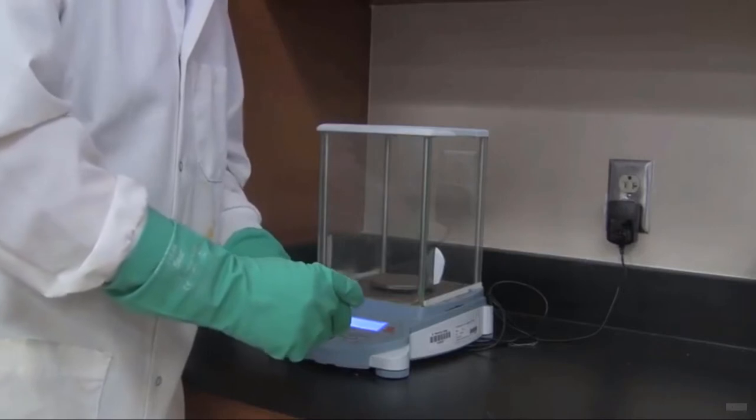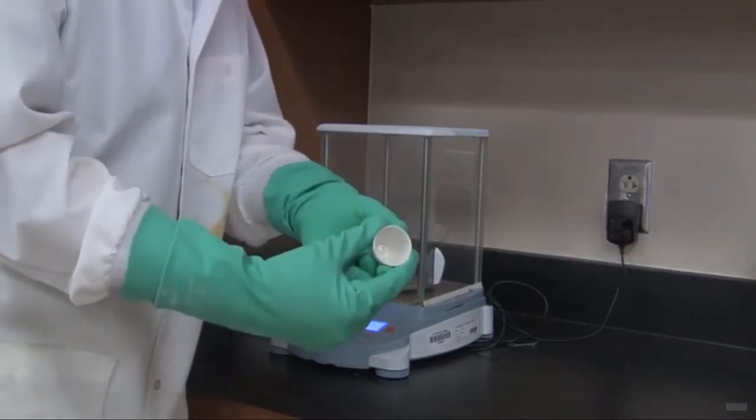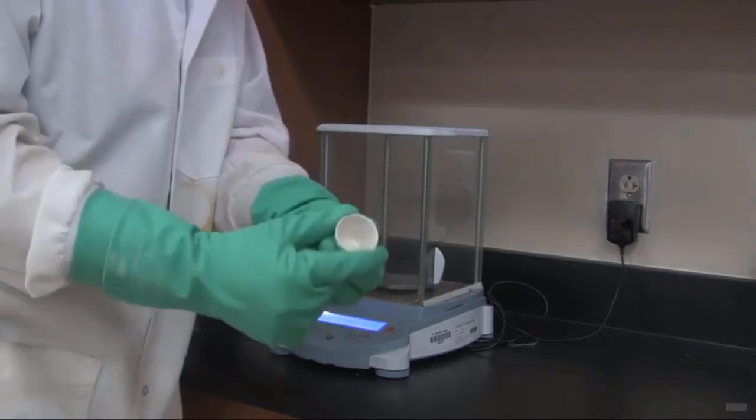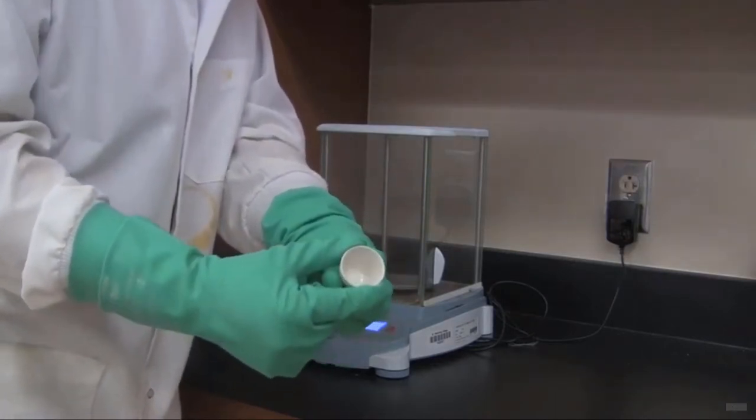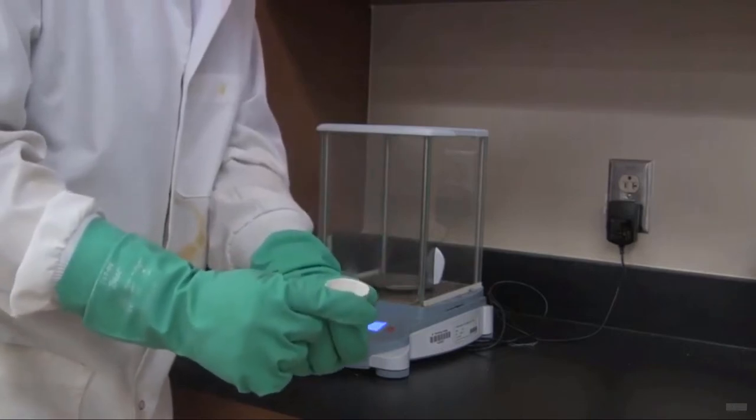This is the first part of the empirical formula lab. What we're doing is we're getting a crucible, and this crucible is in good shape. There's no holes or anything in the bottom of it. And what I'm going to do first is weigh this crucible empty. Notice I'm going to weigh it without the lid.